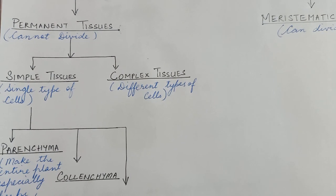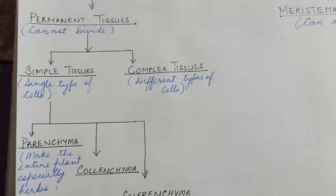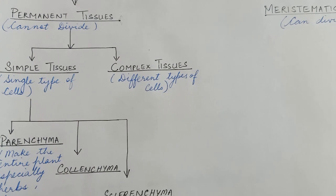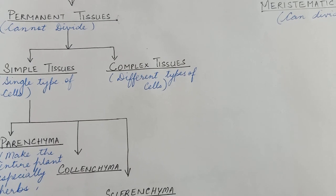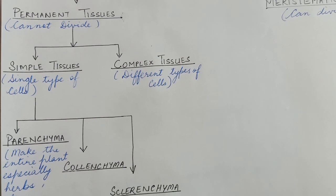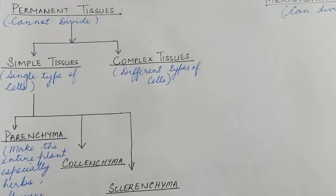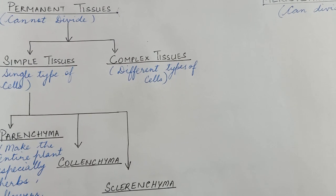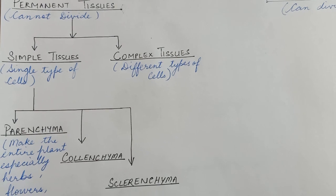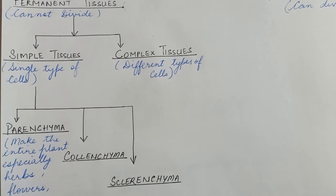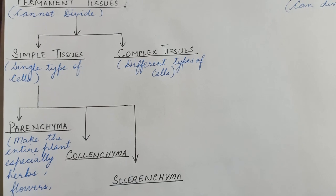Permanent tissue is again of two types: one is simple tissues and the other one is complex tissues. Simple tissue is a kind of tissue which is made up of a single type of cell, and complex tissue is a kind of tissue which is made up of different types of cells. Here we are studying about the simple tissues.